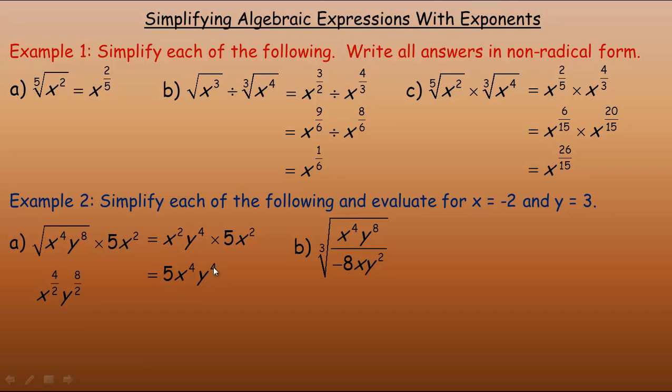Now we've got it simplified, so we would put the negative 2 in place of x and the 3 in place of y. So we need to evaluate negative 2 to the 4th. That means negative 2 times negative 2 times negative 2 times a 4th negative 2, which is 16. And 3 to the 4th is 81. That's 3 times 3 times 3 times 3. So we're multiplying 5 by 16 by 81, which is 6,480.